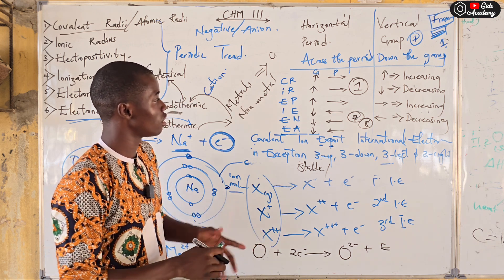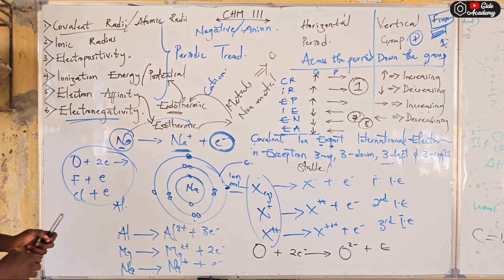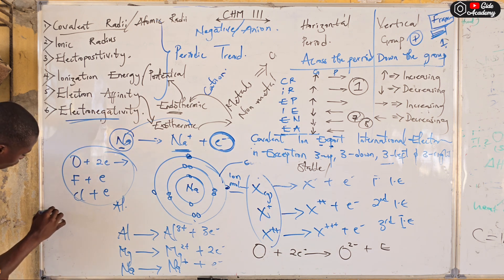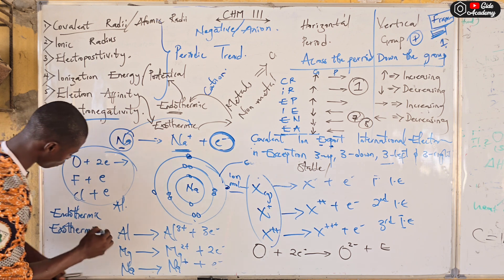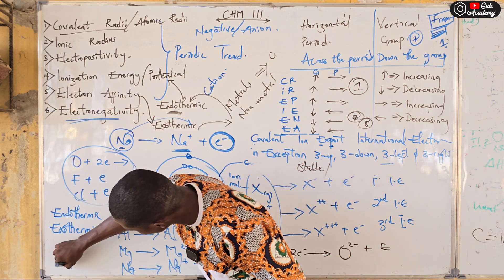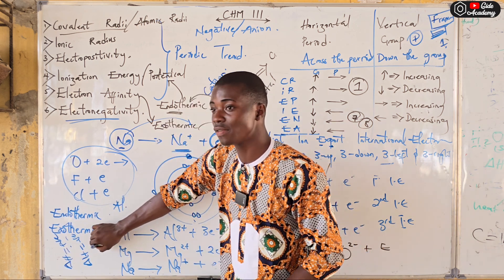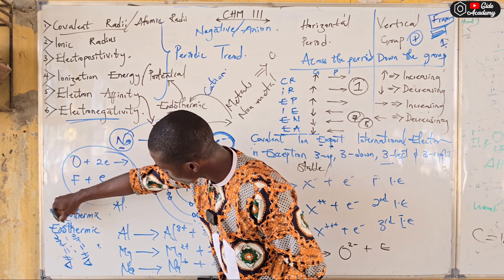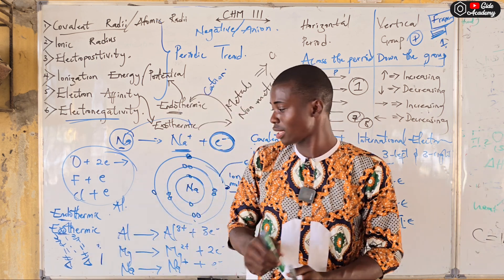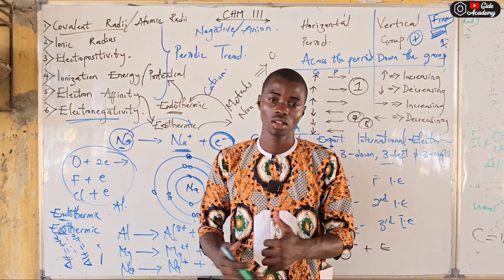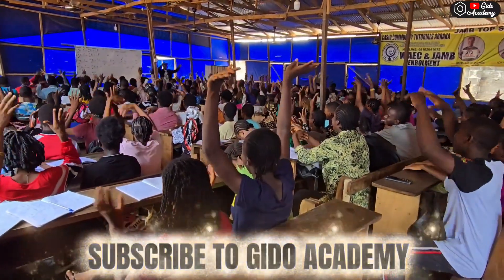I have a question for you. Among all the periodic trends — covalent radii, ionic radii, electropositivity, ionization energy, electron affinity, and electronegativity — which of them is endothermic and which is exothermic? That is, which has a positive delta H and which has a negative delta H? A positive delta H is endothermic, while a negative delta H is exothermic. This is the end of the video — if you are not a subscriber, please subscribe, and leave your comments in the comment section. Thanks for watching, see you in the next episode.